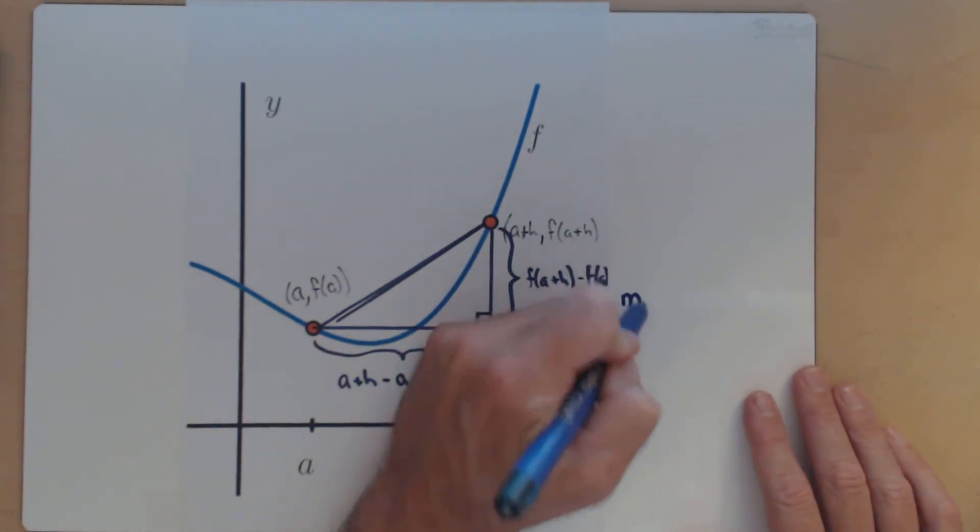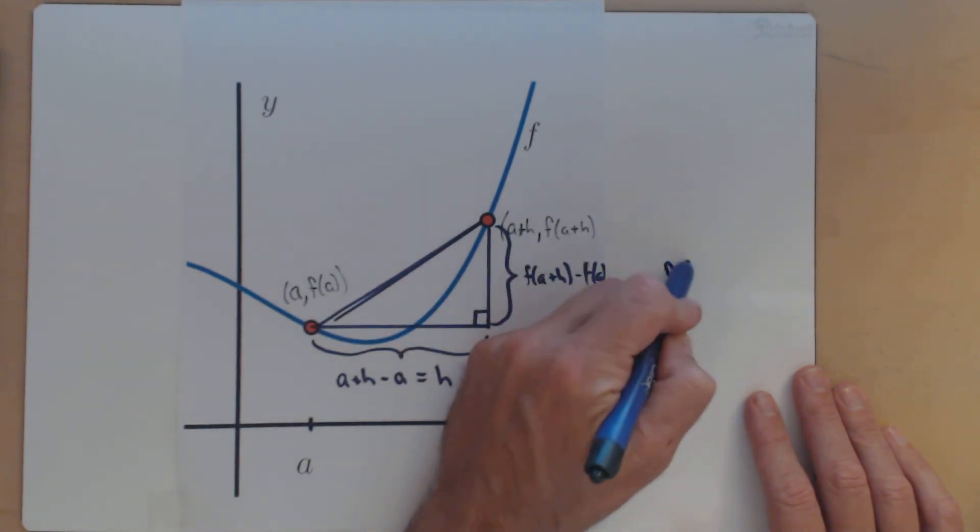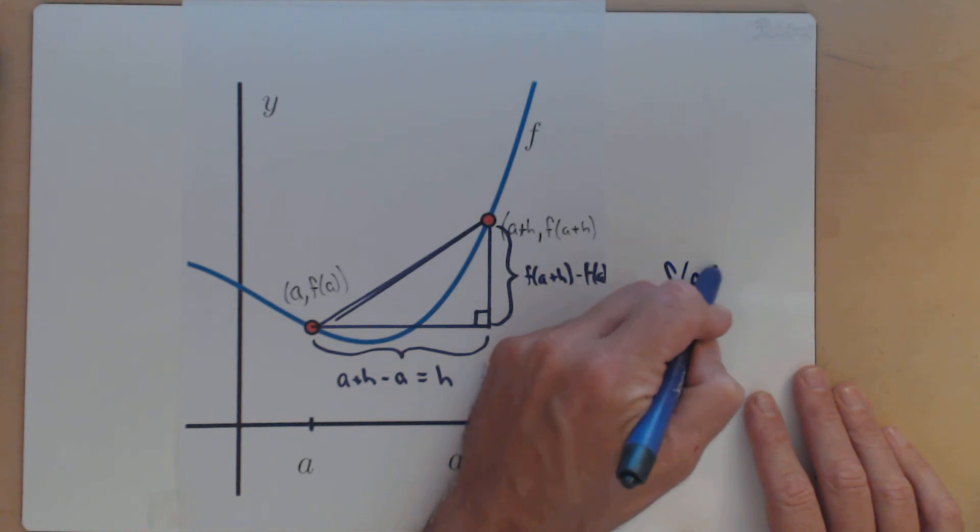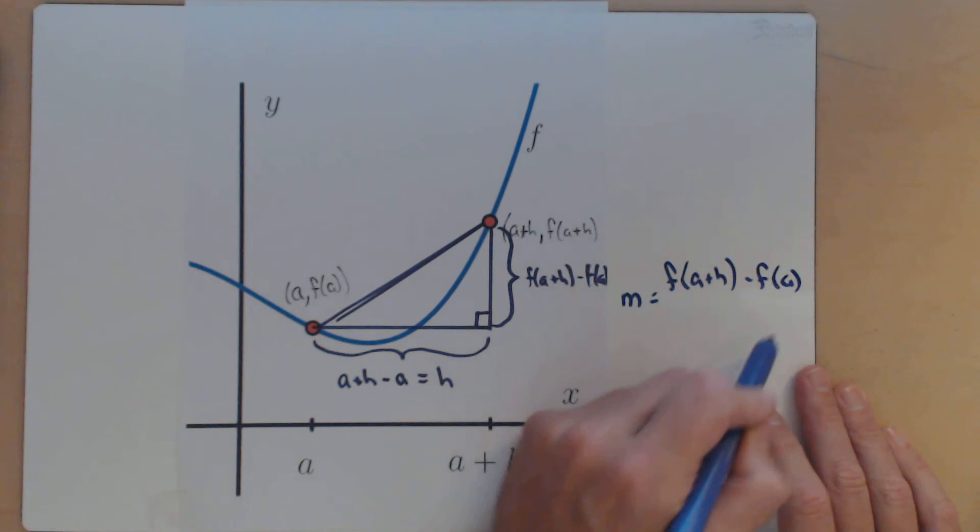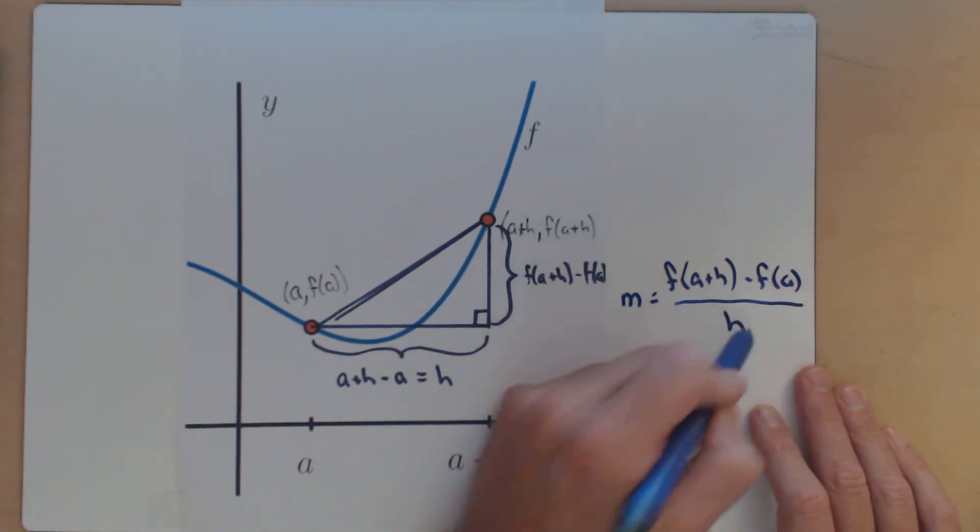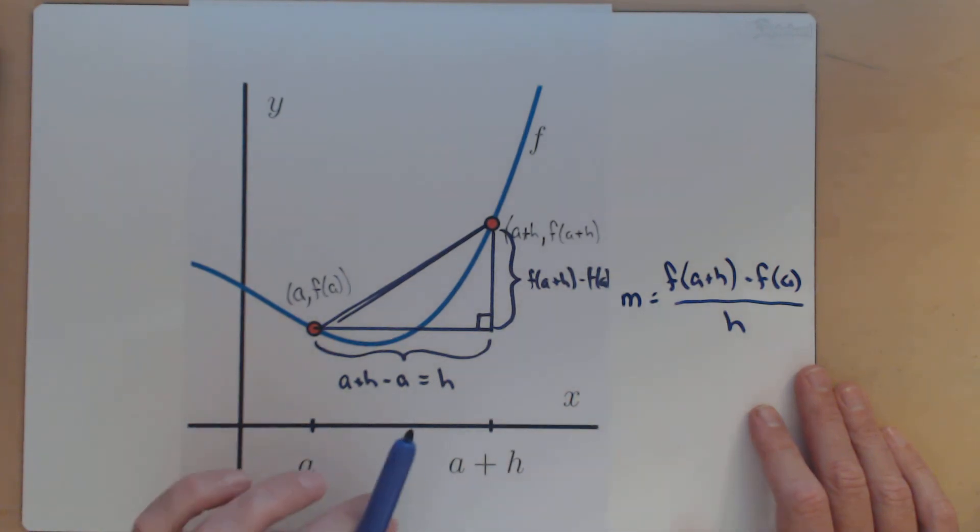So the slope of this line here that connects our two points is our rise, f of a plus h minus f of a, over our run, h. Y2 minus y1 over x2 minus x1, same slope formula you've been using since early on in algebra.